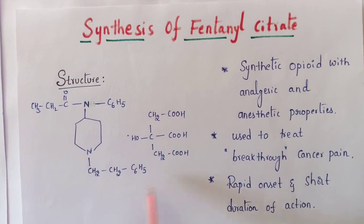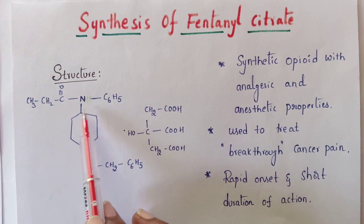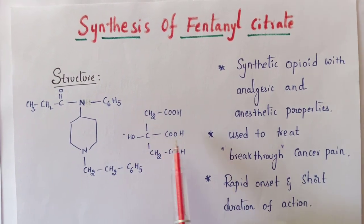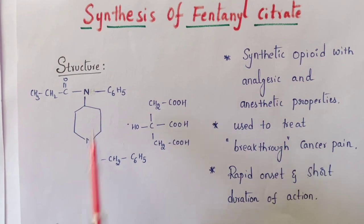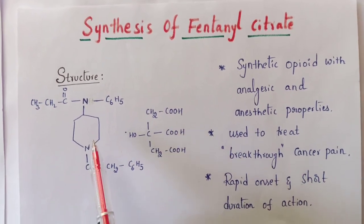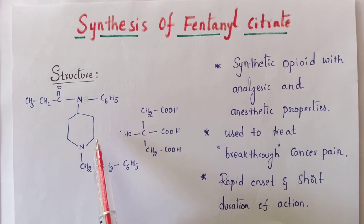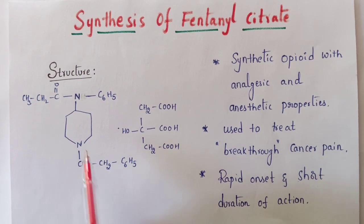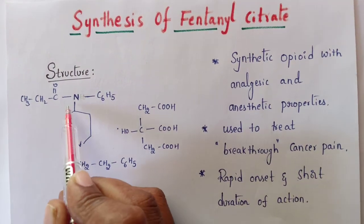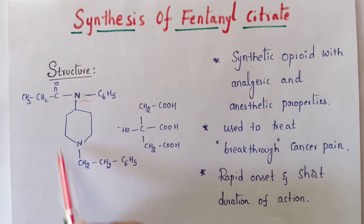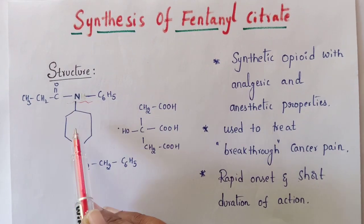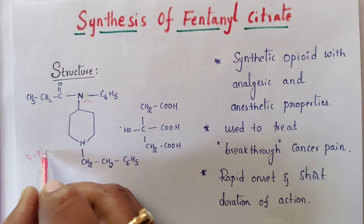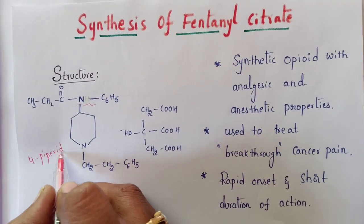This is the structure of fentanyl citrate — it consists of a substituted piperidine. Fentanyl is generally available in the form of a citrate salt. To remember the synthesis, we first practice the structure and then follow a retrosynthetic analysis. We divide the structure: first, there is a piperidine substituted with a ketone at the fourth position, giving a piperidone — so the first starting material is 4-piperidone.